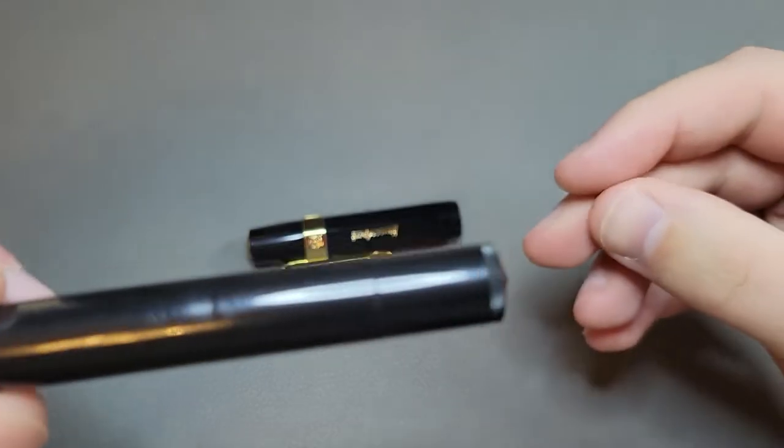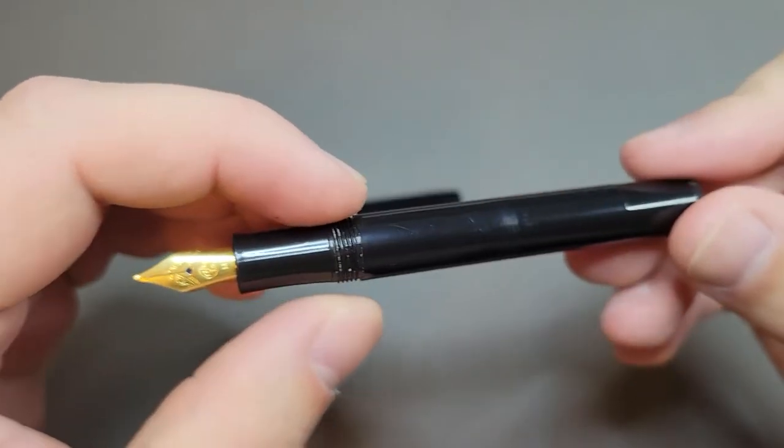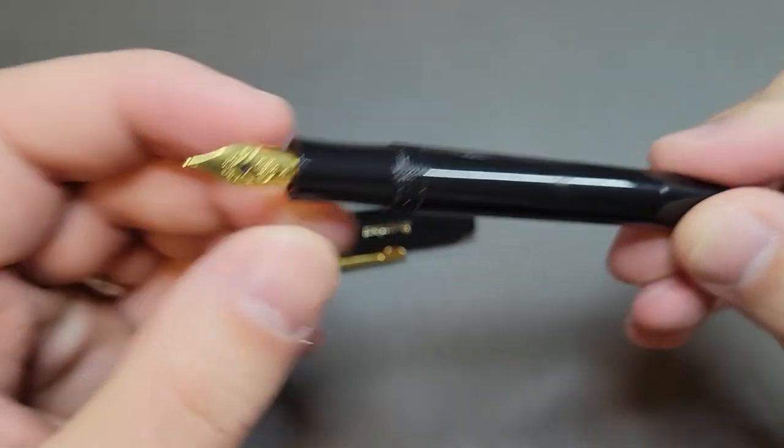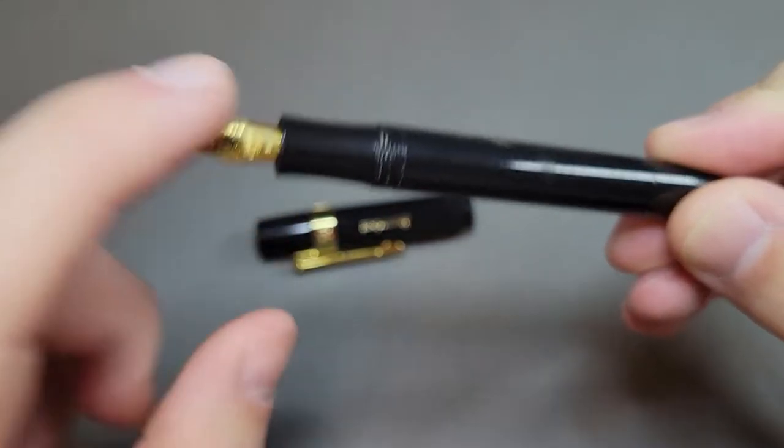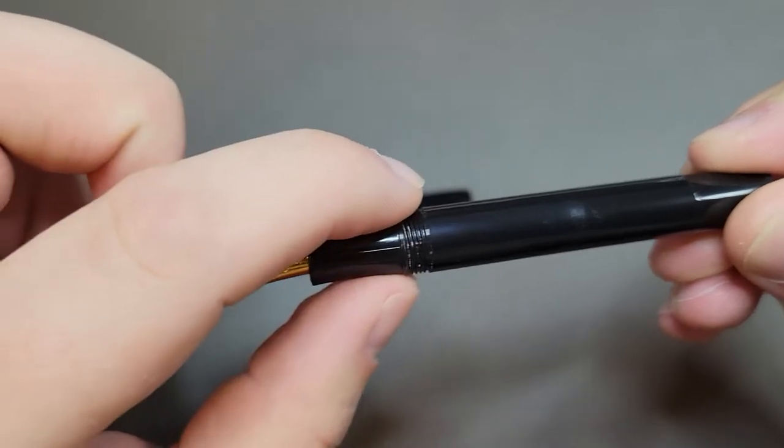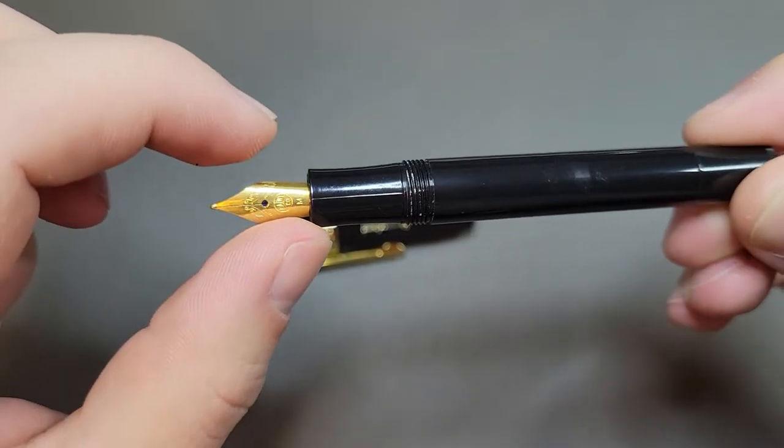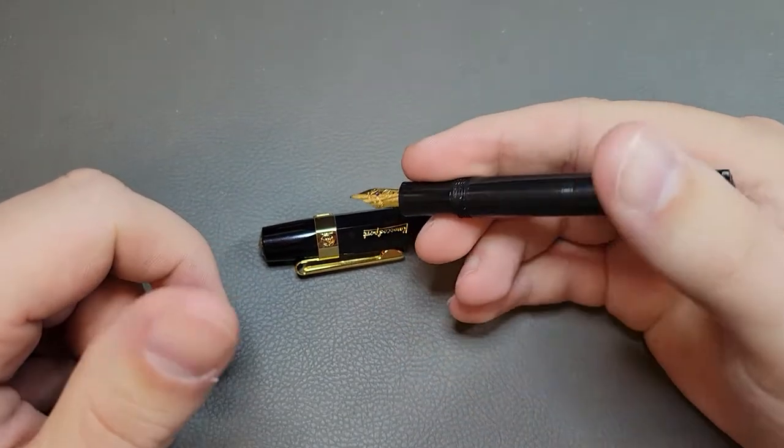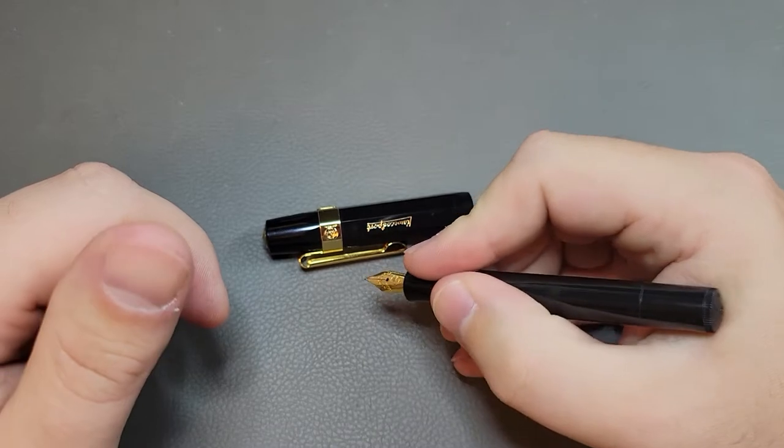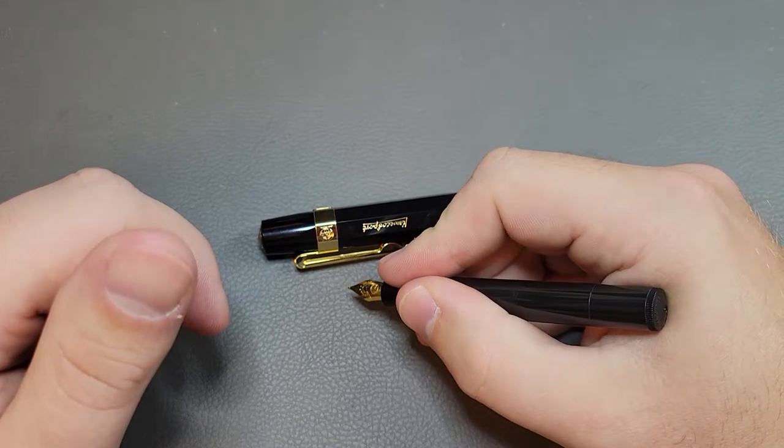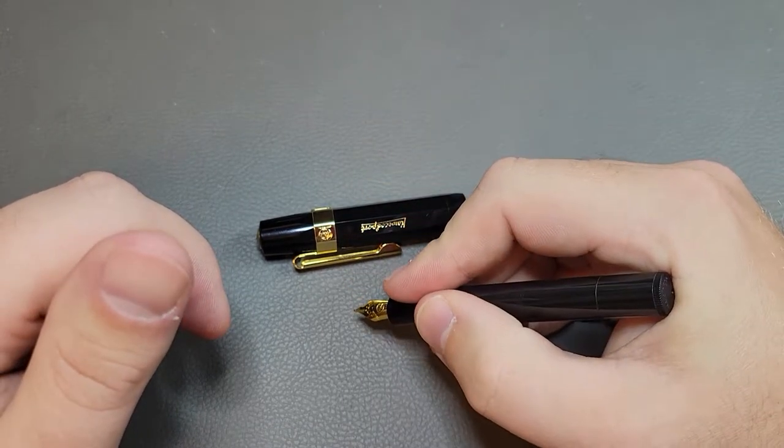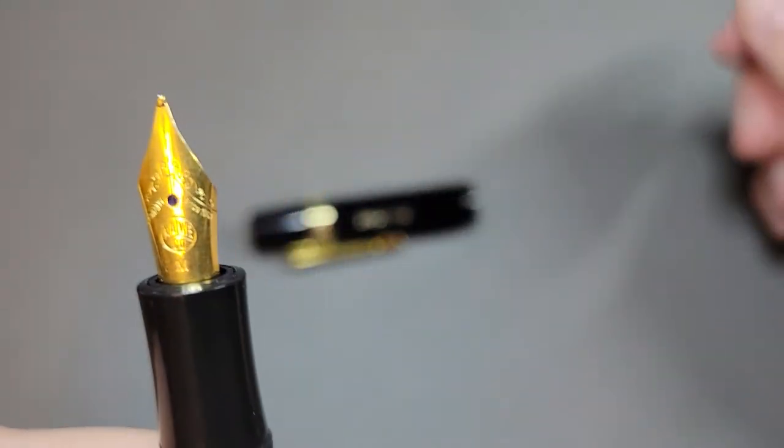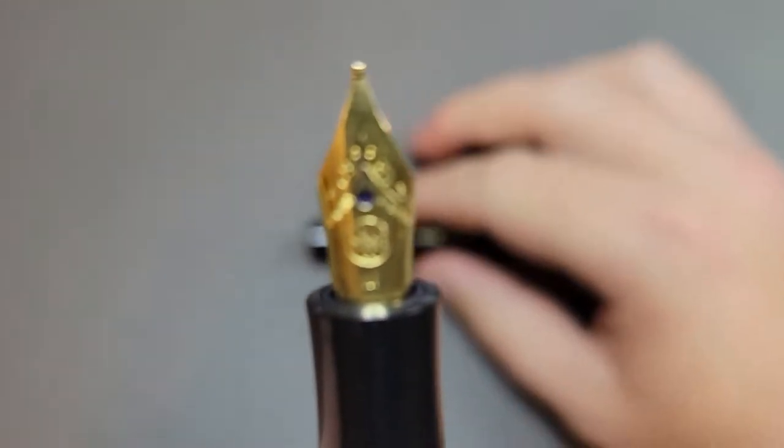You have that plastic barrel, the threads aren't very obtrusive but they're there. But really no step down into the section. The section's concave there just slightly, which makes for a pretty comfortable pen. I hold my pens back a little bit so I have my thumb kind of over the threads and my other fingers here.